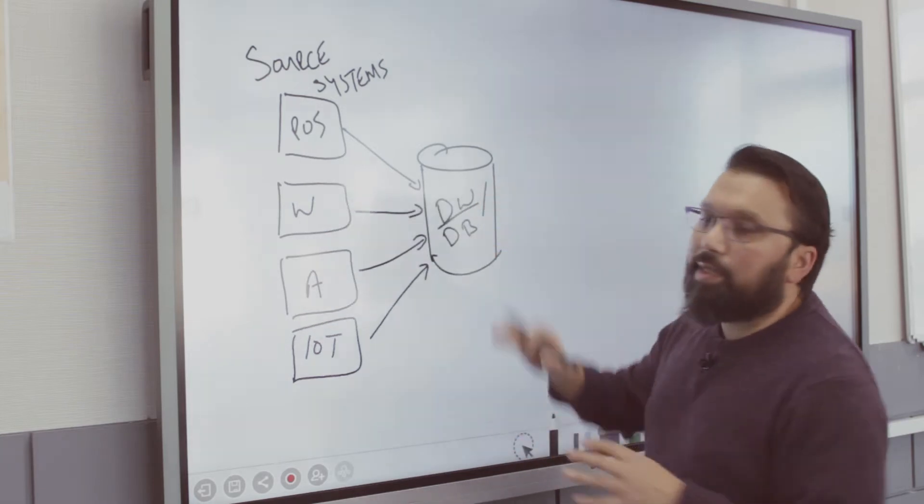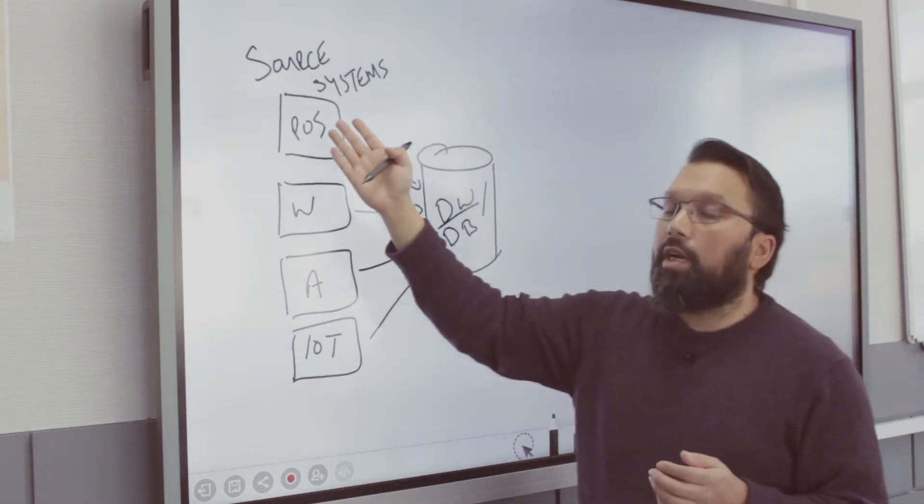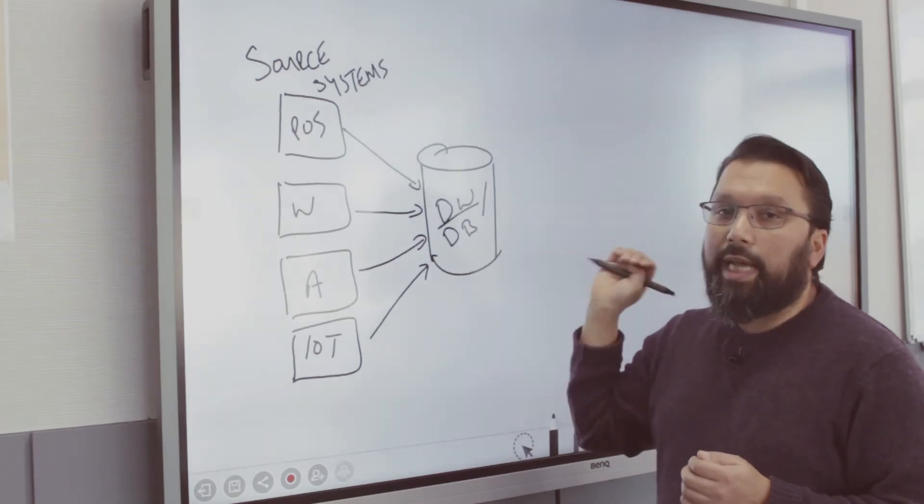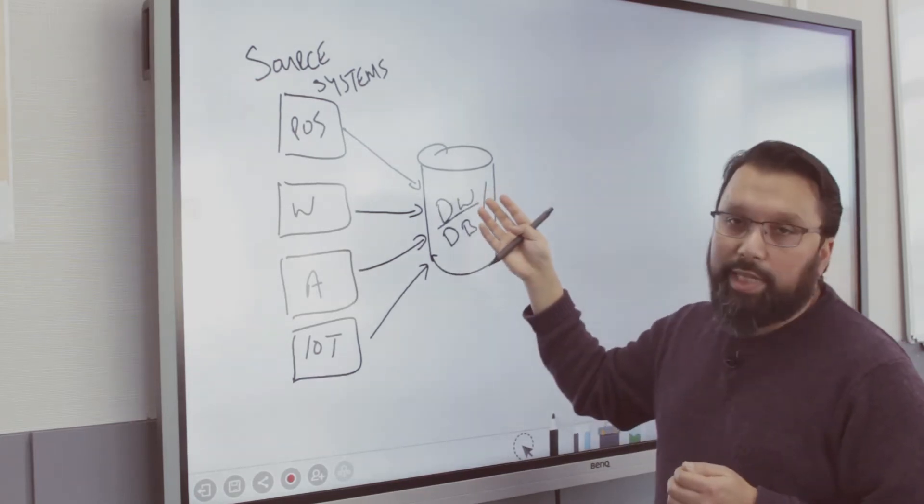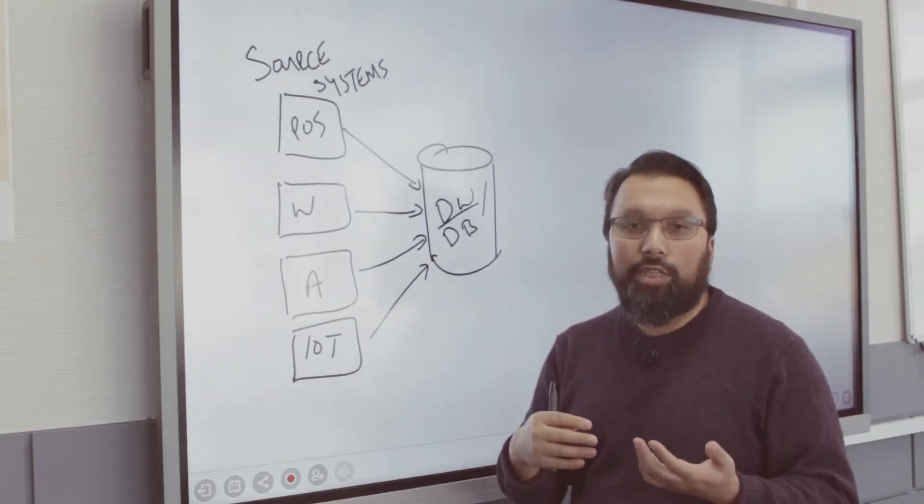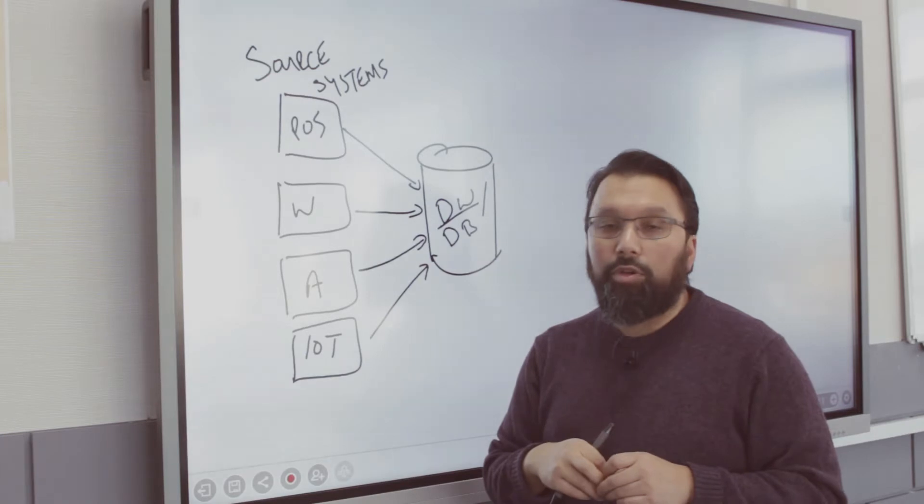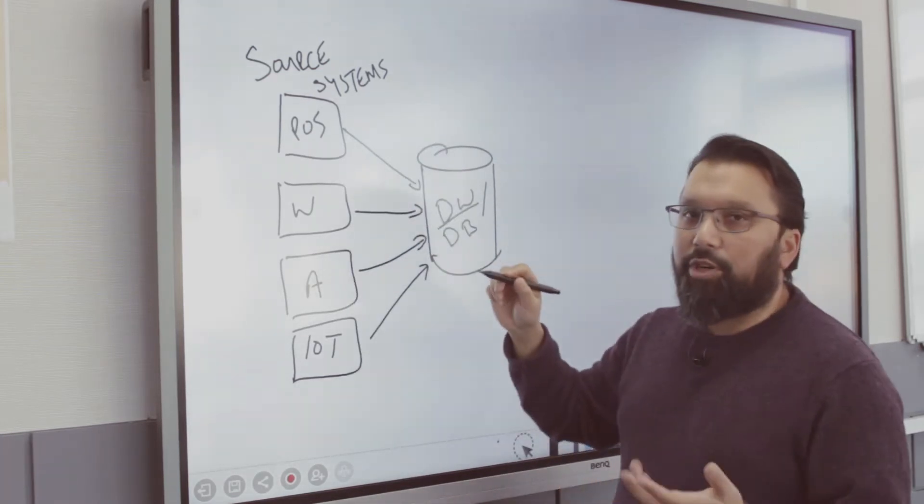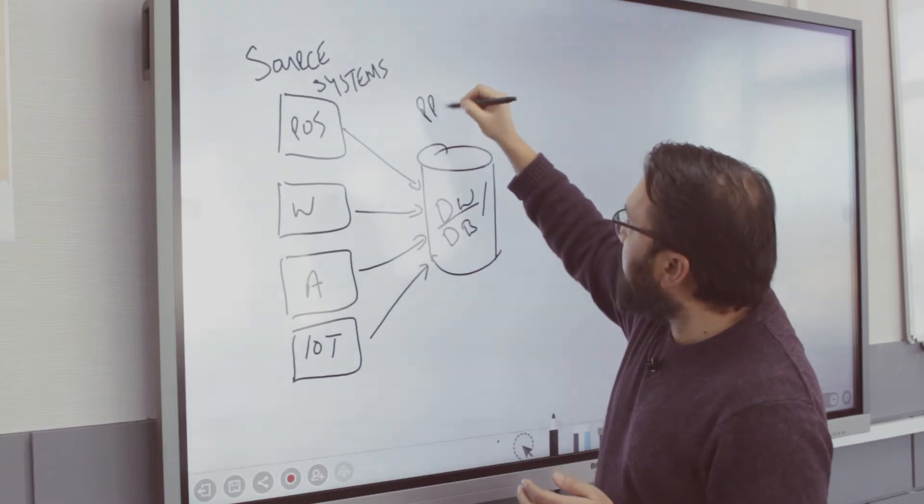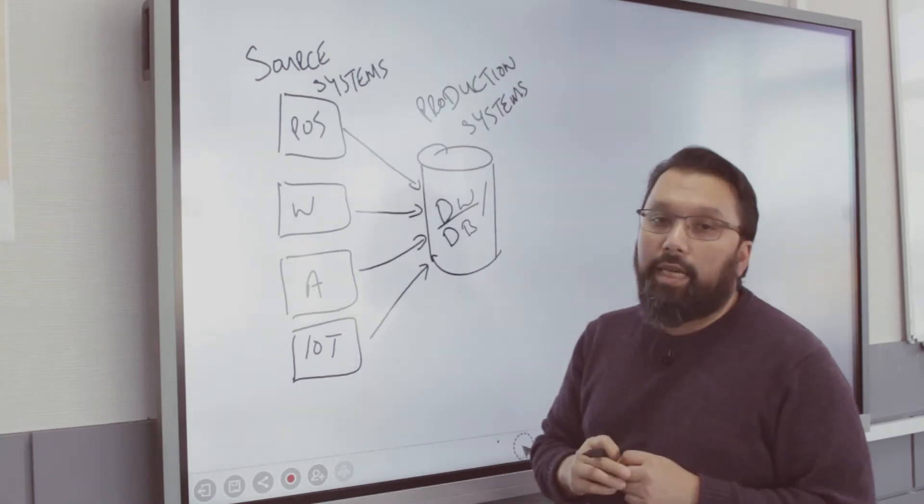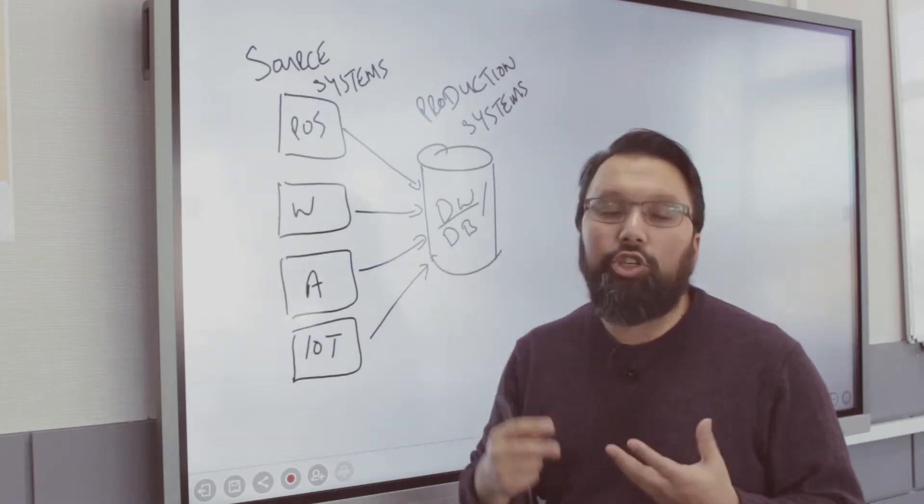What happens is that data goes into this system. So now in this system, the data is stored from these source systems into a data warehouse. What happens is that sometimes there's some processing happening here to make the data simpler, to get rid of data that's not needed, or to transform the data in a way that makes more sense to the business.